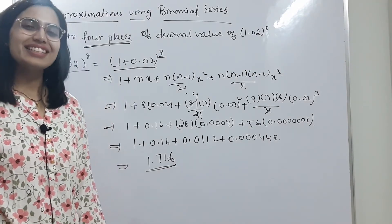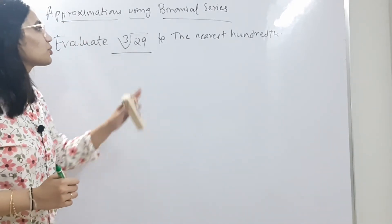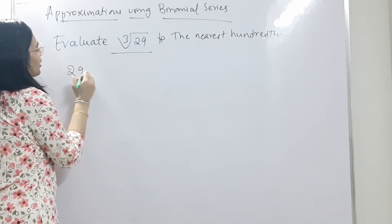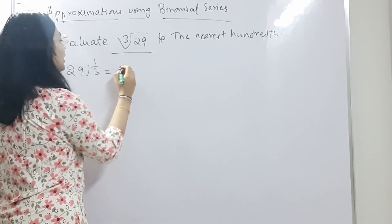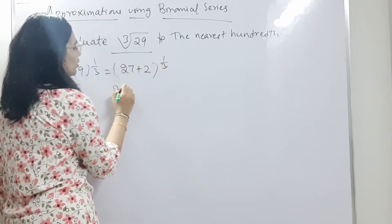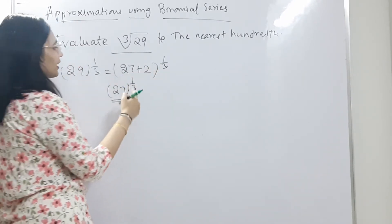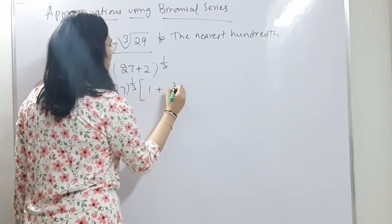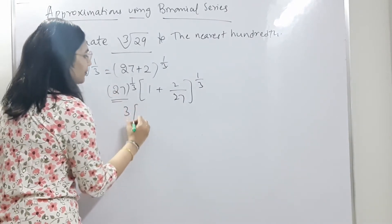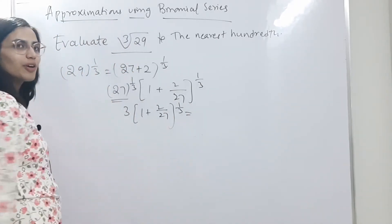Now let's look at another problem. We need to evaluate 29^(1/3) to the nearest hundredth using binomial series. We write 29^(1/3) as (27 + 2)^(1/3). We take 27 outside because we can directly get the cube root of 27. This becomes 27^(1/3) · (1 + 2/27)^(1/3), which is 3 · (1 + 2/27)^(1/3). Now this is in the form of binomial series.